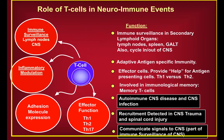T cells are involved in immune surveillance within secondary lymphoid organs, and they travel through the choroid plexus and CSF into and out of the CNS, exiting via the newly identified brain lymphatic system. They're involved in inflammatory modulation, increasing adhesion molecule expression, and have different effector functions: Th1 is a macrophage-driven response, Th2 is an antibody/B cell response, and Th17 is a specific inflammatory T cell response. T cells also form memory after inflammatory events.